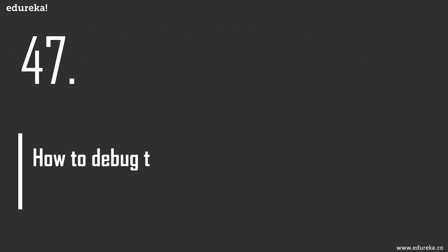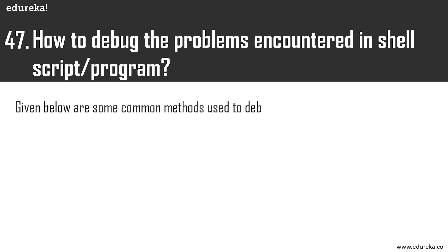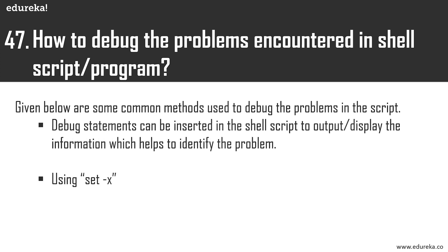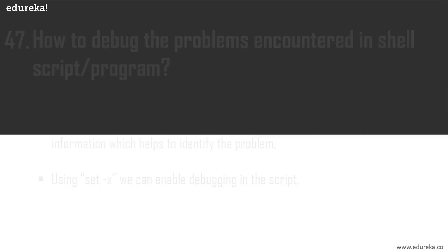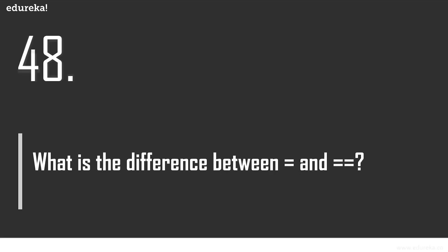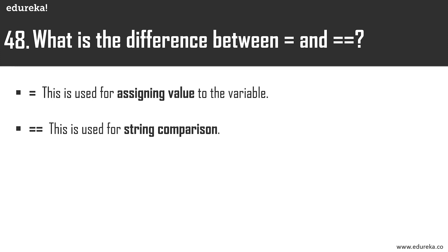How to debug problems in a shell script or program? There are two ways: first, by inserting debug statements in the shell script to output information that helps identify the problem. Second, by using 'set -x' to enable debugging in the script. What is the difference between a single equal sign and a double equal sign? The single = assigns a value to a variable, while == is used for string and arithmetic comparison.